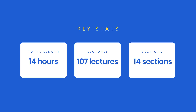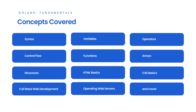This course is 14 hours long and consists of 107 different lectures that you can watch at your own pace and re-watch as many times as you like. In this course, you'll learn full-stack web development with the Go programming language. This course begins by covering the Golang basics: syntax, variables, operators, control flow, functions, etc. Then it switches to web development skills and operating web servers.